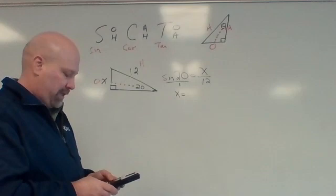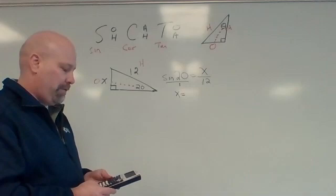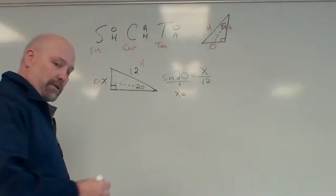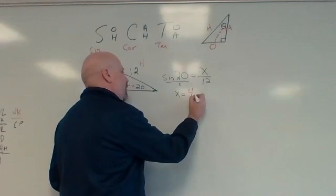So now I'm going to do sine 20. On my calculator, I have to then close the parentheses, times 12. 4.1 is my answer. This extra says 4.104, but that doesn't round anywhere, so 4.1.